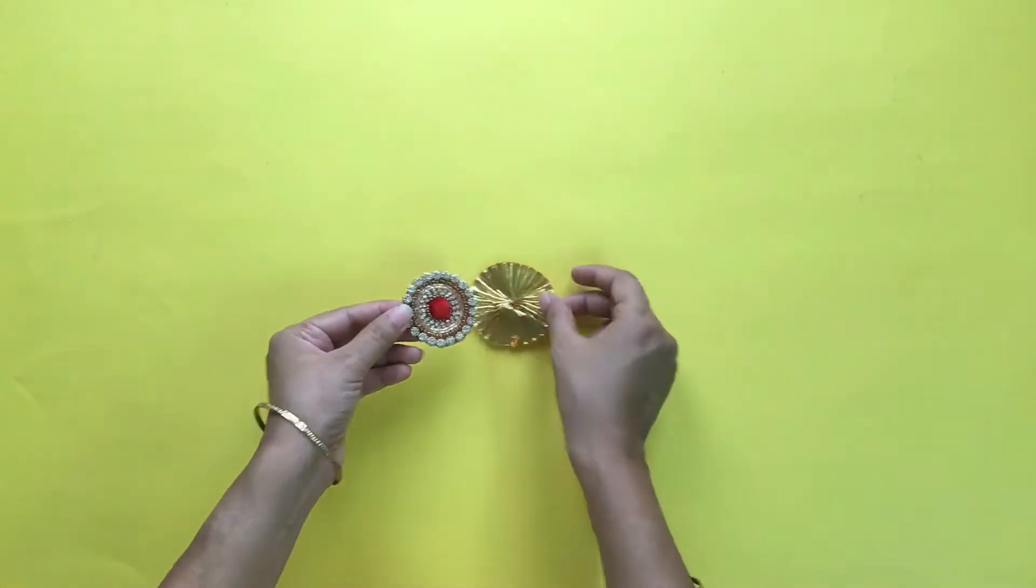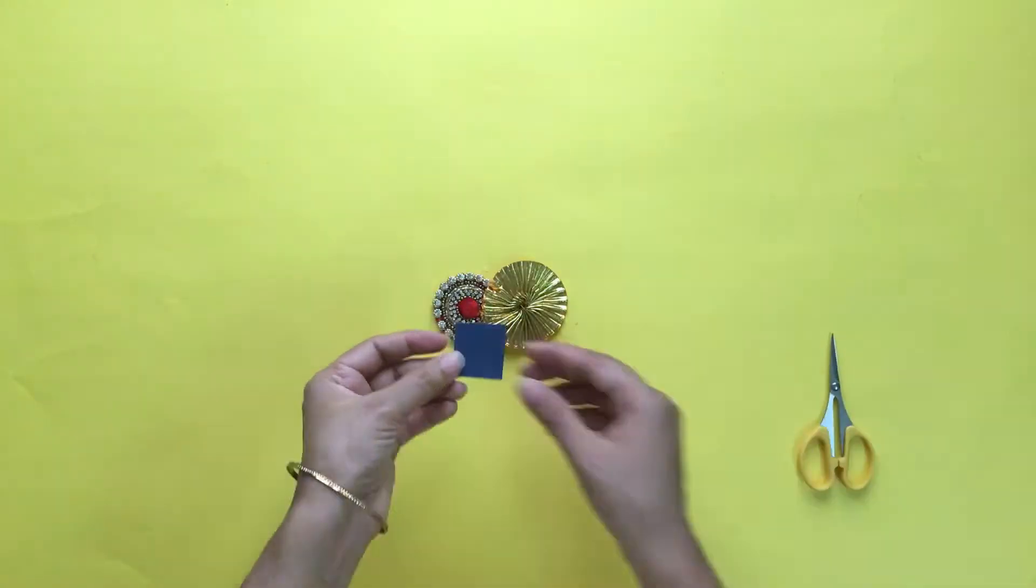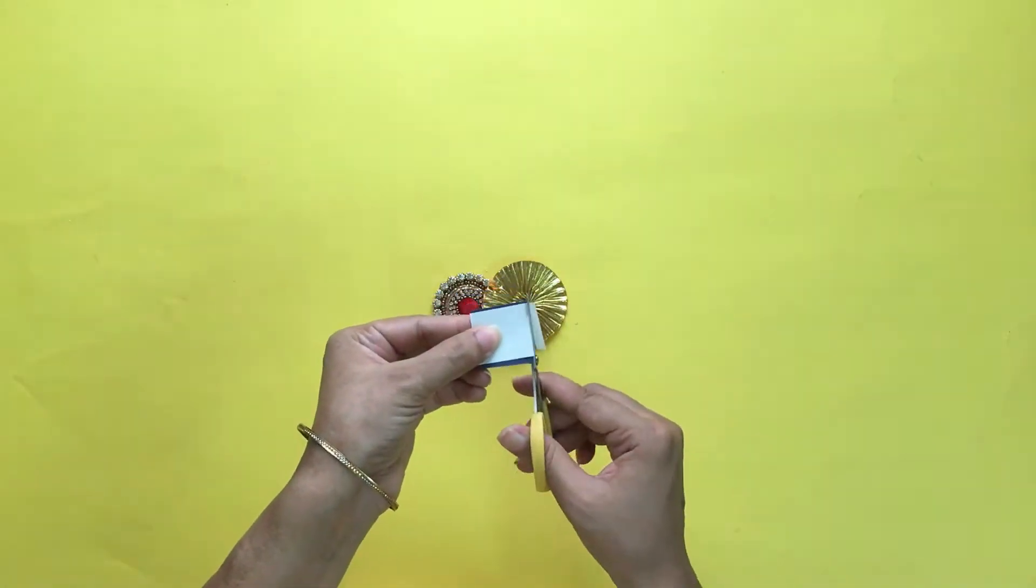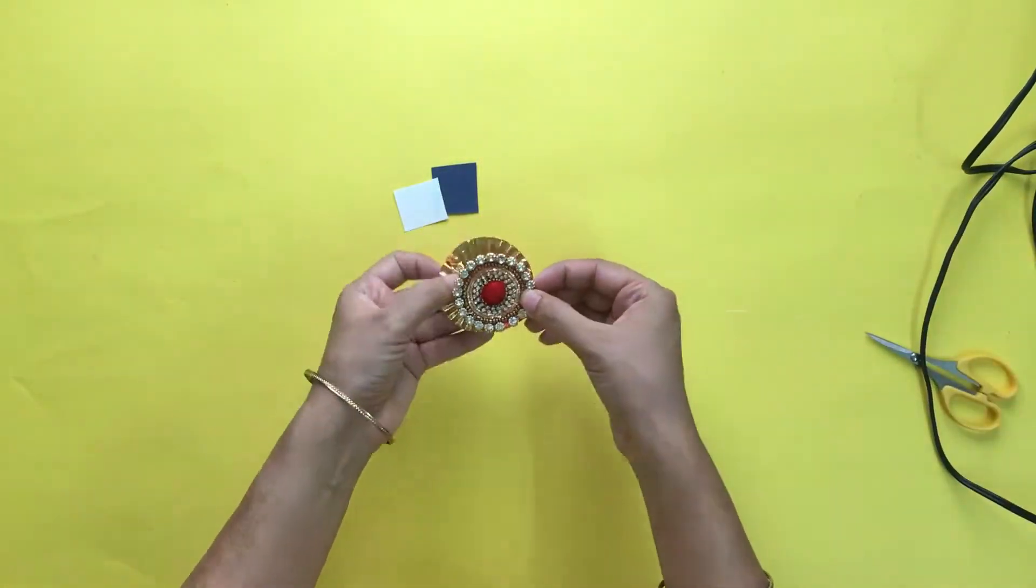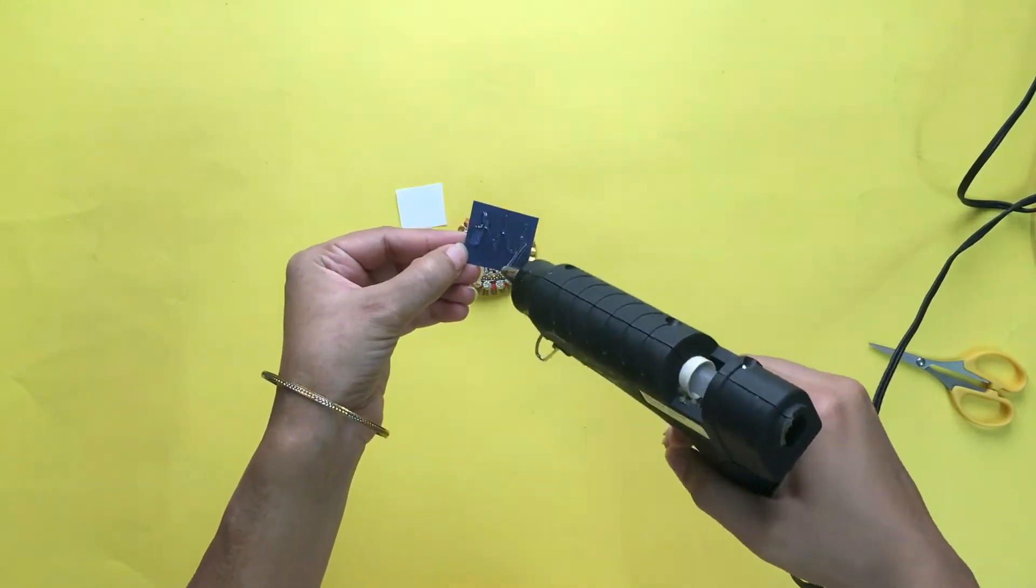For the second Rakhi, I am using a slightly bigger gotha and Rakhi top with a different design pattern. Follow the same process as of the first Rakhi step by step to make the second Rakhi.